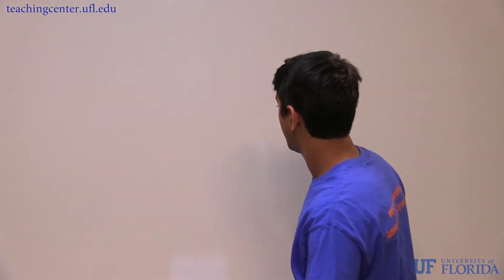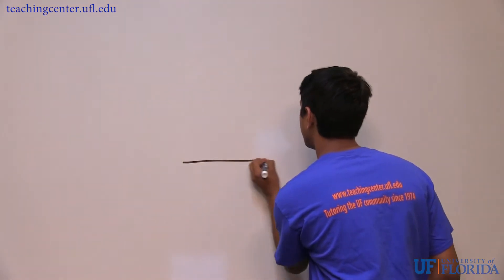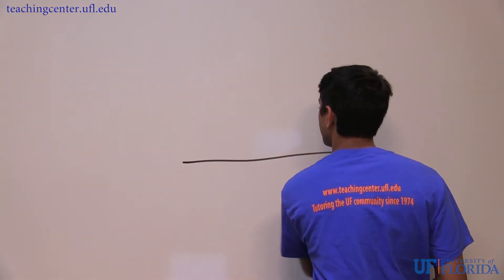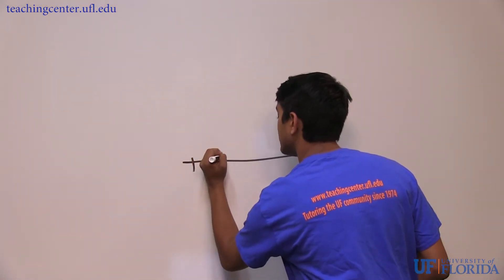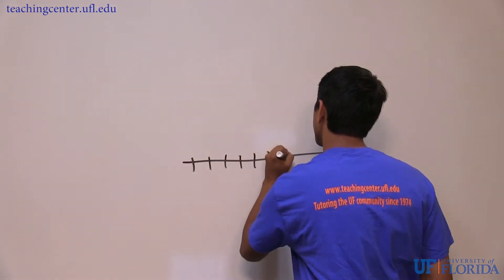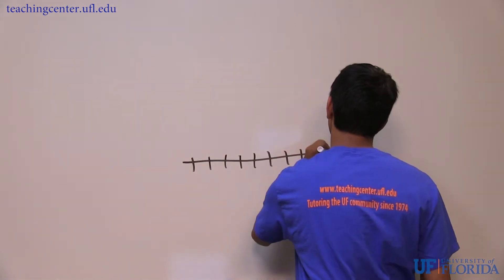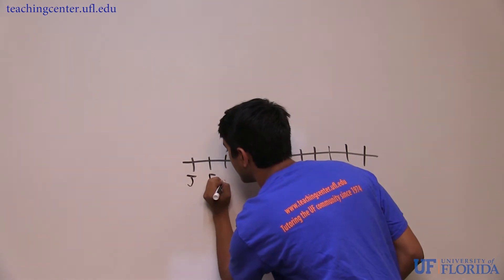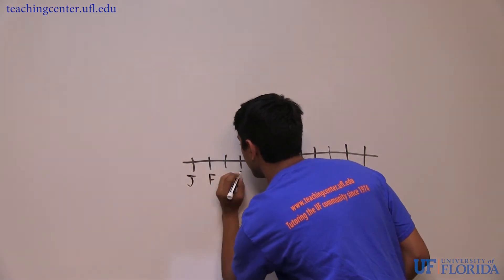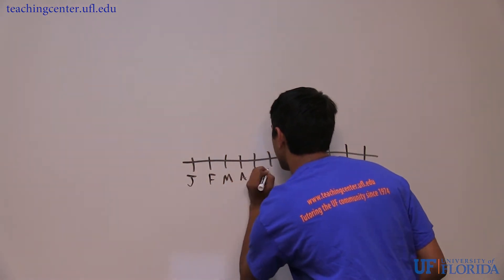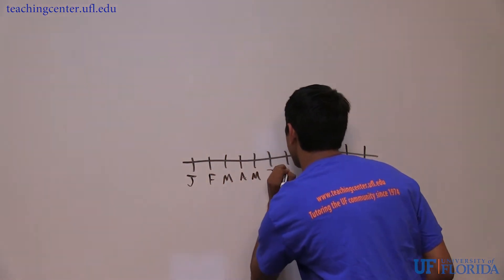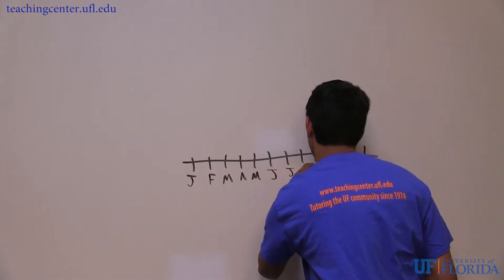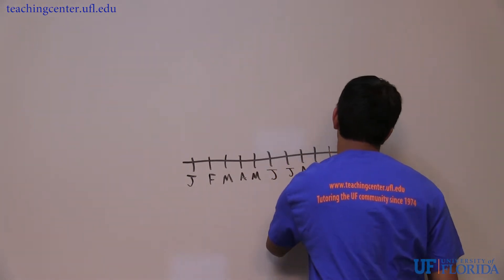We're now going to create a mock Walter-Kleibhut diagram, beginning with the x-axis. The diagram's x-axis displays the months of the year beginning with the coldest month. If that coldest month is in January or February, then you know the biome is in the northern hemisphere. If that coldest month is in June or July, then you know the biome is in the southern hemisphere, which has opposite winters to the northern hemisphere.